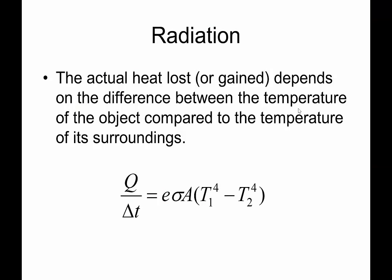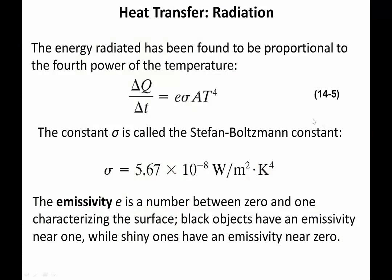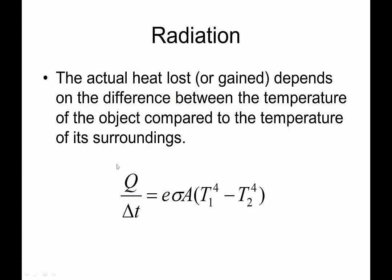The actual heat lost or gained from radiation depends on the actual difference in temperature. This equation, the Stefan-Boltzmann equation, tells you how fast you're both radiating heat and how fast you absorb heat from the outside. So when you're asking, let's say, how fast you're heating up or cooling down, you need to look at the temperature of one thing and temperature of the other thing and subtract them to the fourth power.